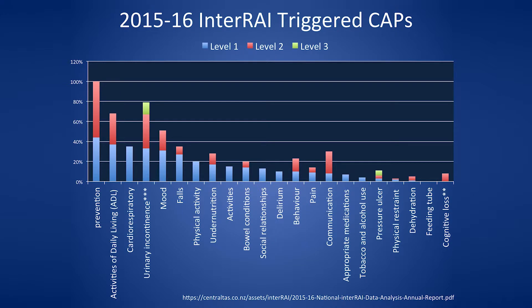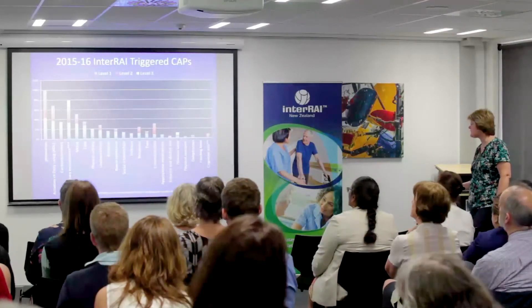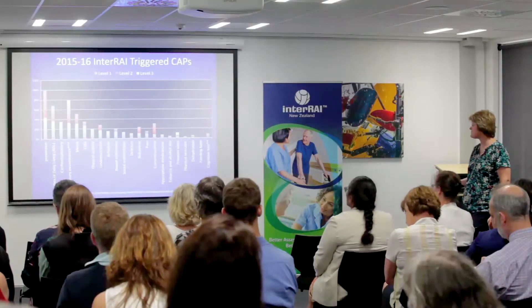Looking at the most commonly triggered CAPs: activities of daily living, cardiorespiratory, urinary incontinence, mood, falls, and physical activity are at the top, along with bowels and others. Pain is relatively low, except in palliative care. In a study called ARCUS and ARCIP, we found that with cardiorespiratory issues we were able to influence hospitalization more than with other issues. I think there is a lot that can be done particularly with cardiorespiratory and urinary incontinence.